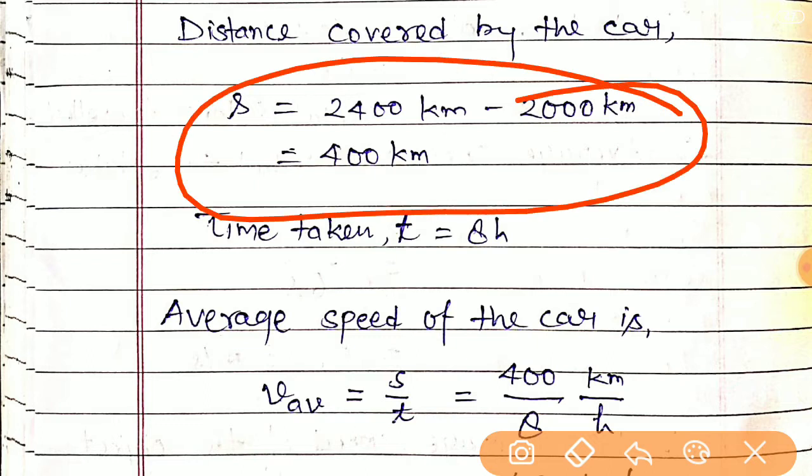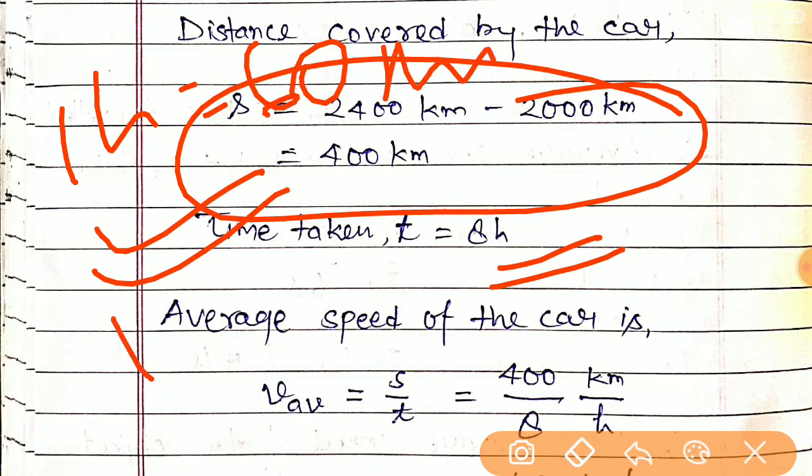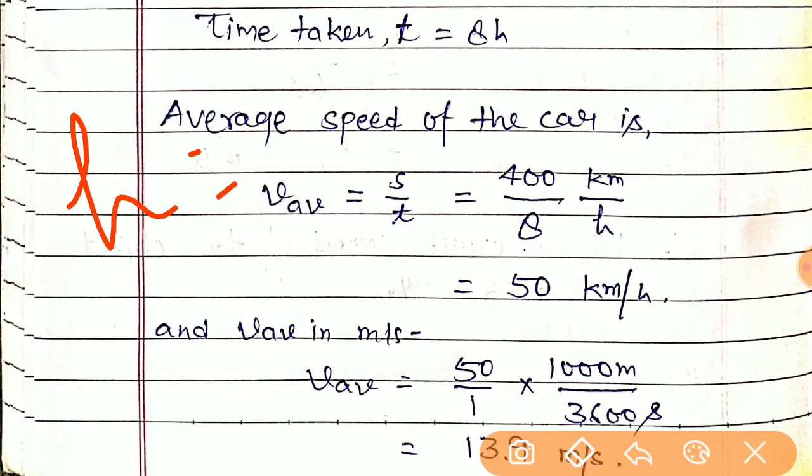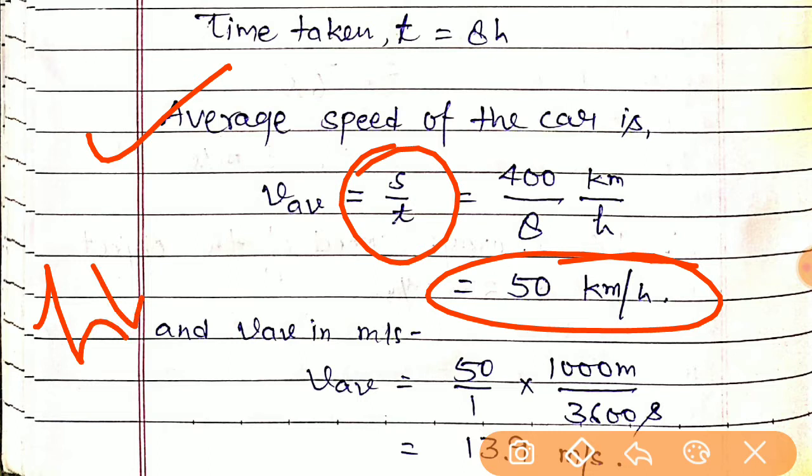Time taken is 8 hours. One hour equals 60 minutes and one minute equals 60 seconds. The average speed equals distance divided by time, which is 400 kilometers divided by 8 hours, giving us 50 kilometers per hour. This means in one hour the object covers 50 kilometers.